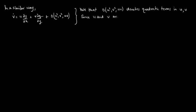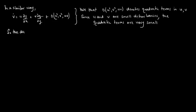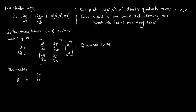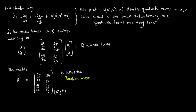Since u and v are small disturbances, the quadratic terms are very small. So the disturbance equations become: (u-dot, v-dot) = A · (u, v) plus quadratic terms, where the matrix A = [[df/dx, df/dy], [dg/dx, dg/dy]] evaluated at (x*, y*) is called the Jacobian matrix at the fixed point.